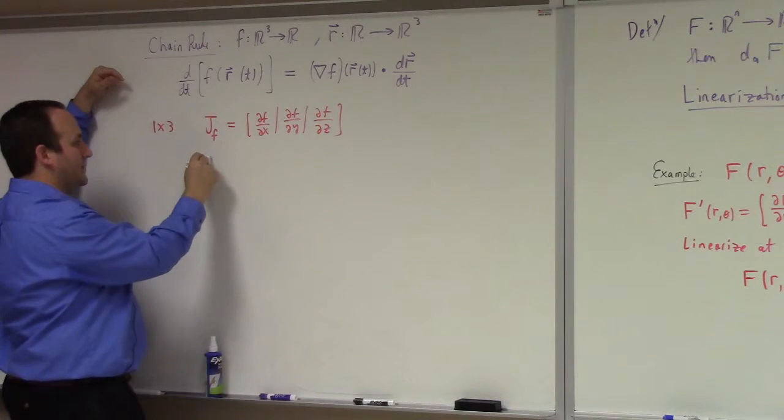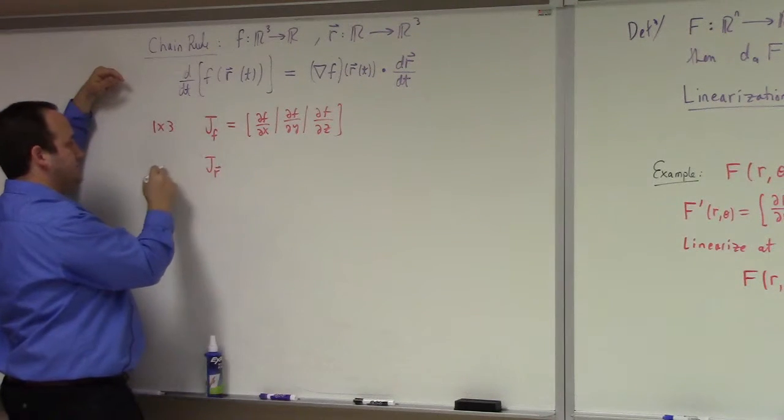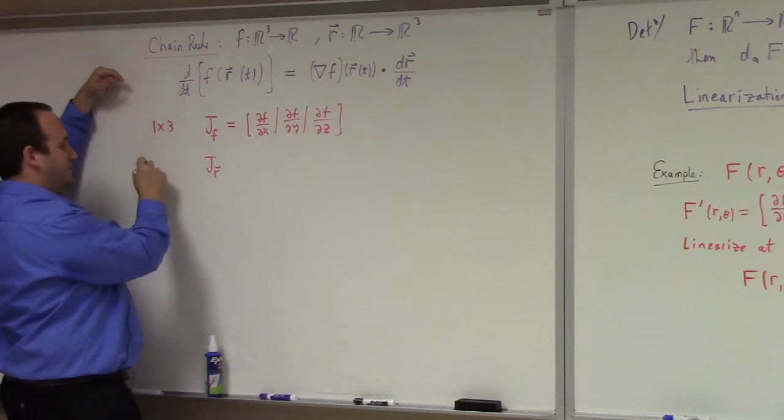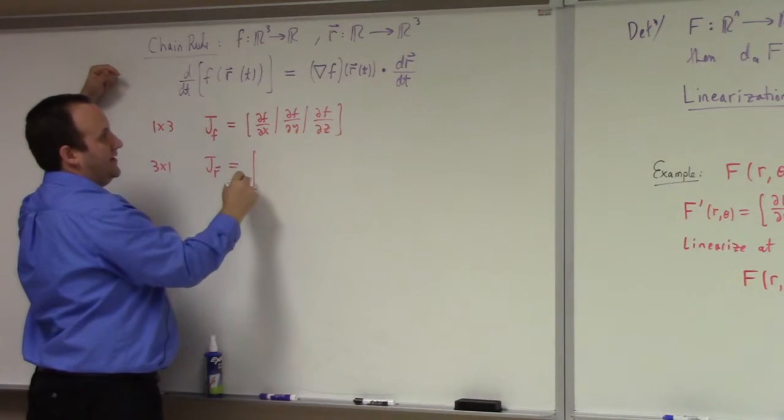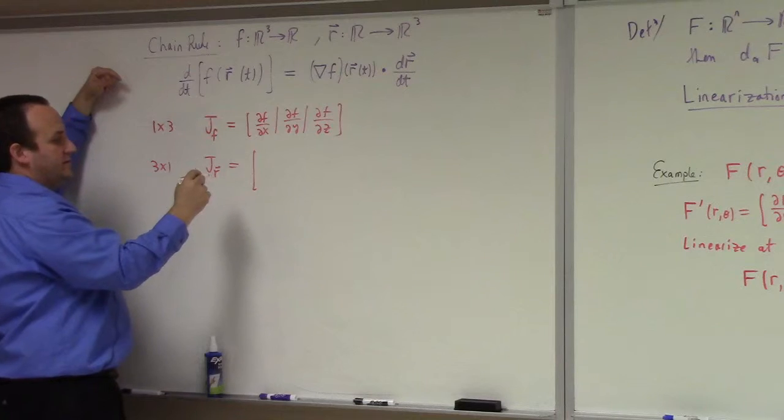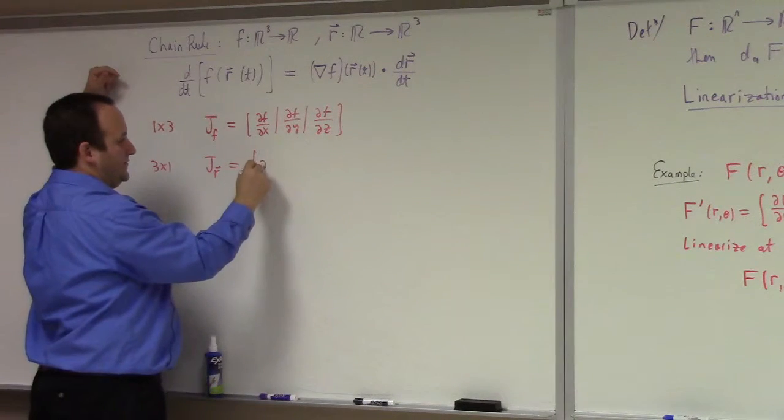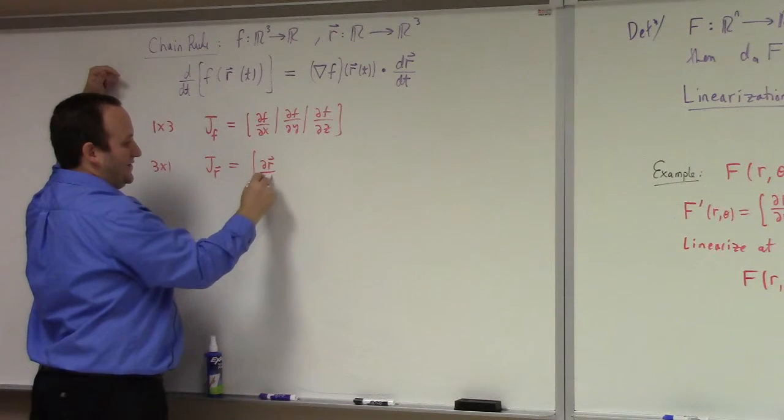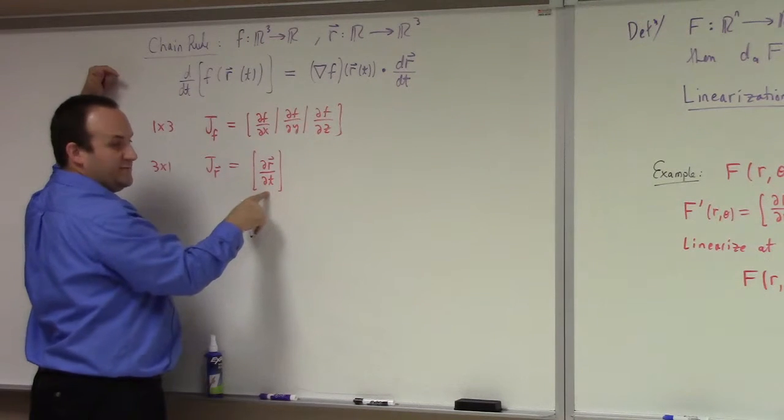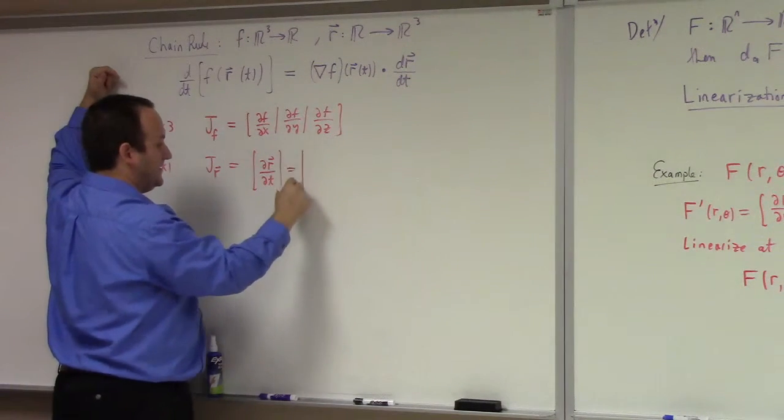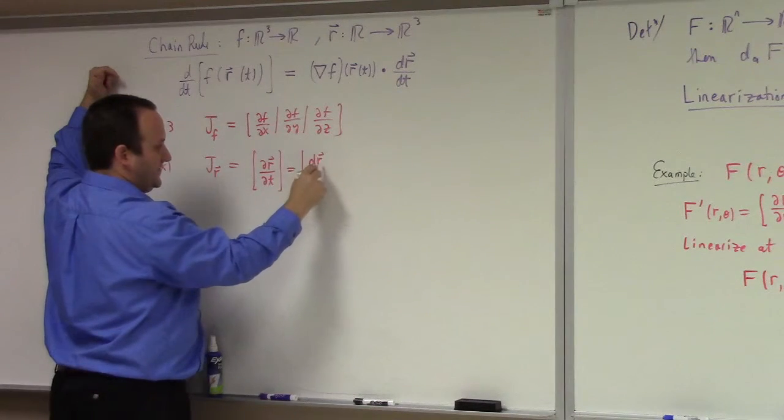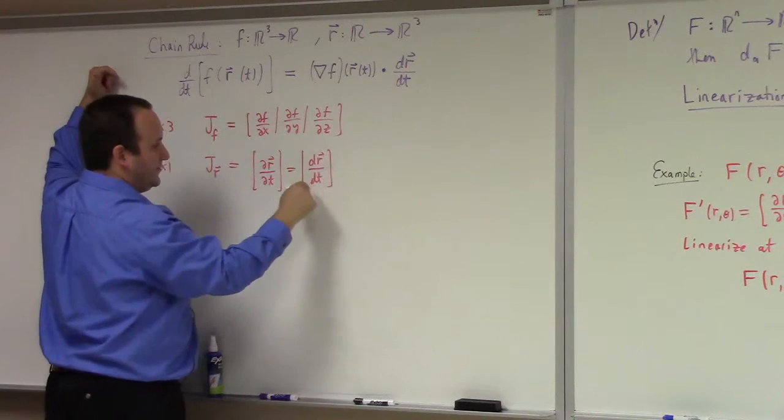What's the Jacobian of R? 3 by 1. Maybe you recognize it. I guess I need some notation for R. You could say partial R partial T, but usually when we just have one independent variable, we don't use the partial notation. We just say that's dr/dt. So that's our notation for one variable.